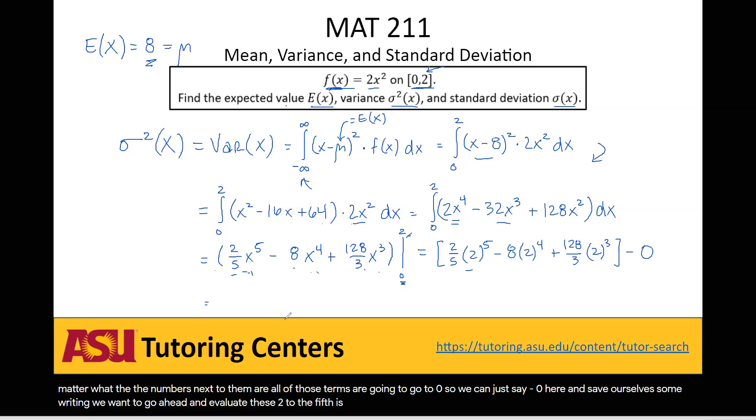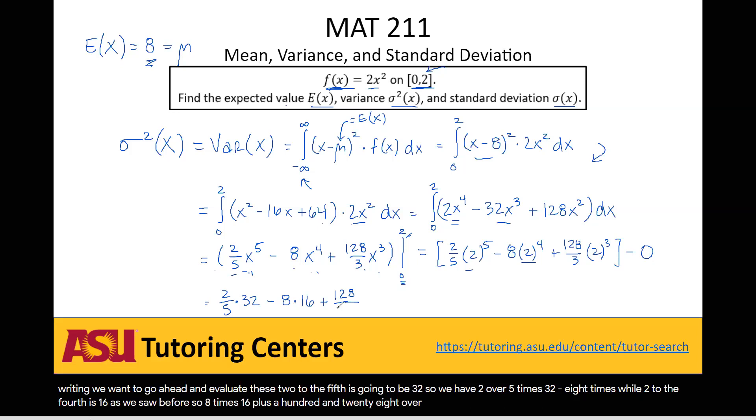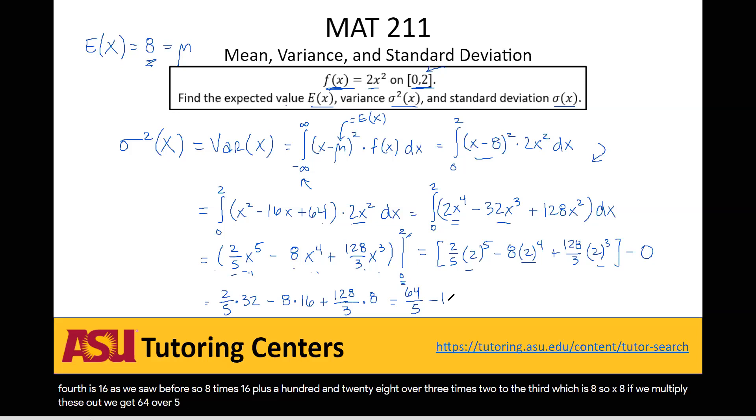So now if we go ahead and evaluate these, 2 to the 5th is going to be 32. So we have 2 over 5 times 32 minus 8 times, well, 2 to the 4th is 16, as we saw before. So 8 times 16 plus 128 over 3 times 2 to the 3rd, which is 8, so times 8. If we multiply these out, we get 64 over 5 minus 128 plus 1024 divided by 3.